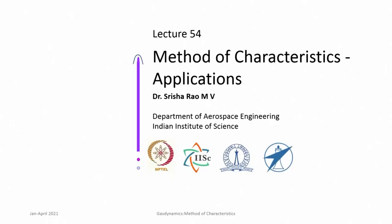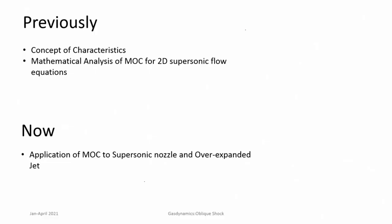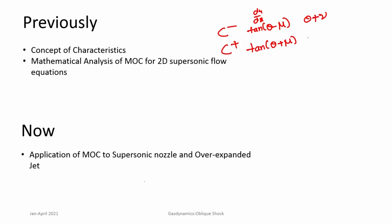We are looking at the method of characteristics approach to solve supersonic flow field problems in the case of irrotational isentropic flows. In the previous classes we discussed what these characteristic lines are and how to get the characteristic equations and compatibility conditions for a 2D supersonic flow. The characteristic lines are C-minus and C-plus; the slopes of the characteristic lines dy/dx is tan(θ − μ) where μ is the Mach angle for C-minus characteristic, and tan(θ + μ) for C-plus characteristic.